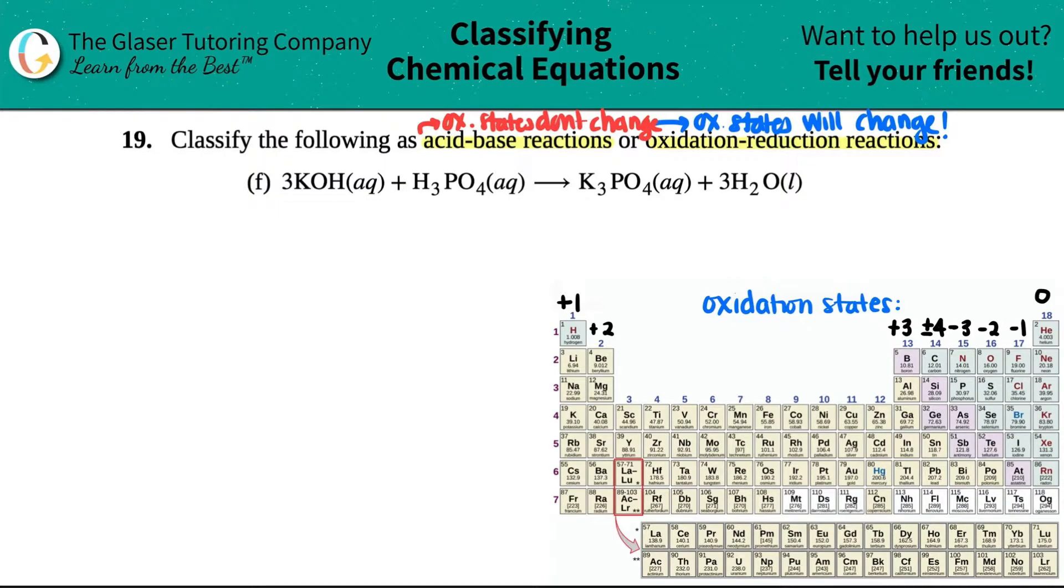So you won't see any changes in the charges from left to right, and generally, not all the time, but an acid-base reaction always has the setup as acid plus base yields salt plus water.